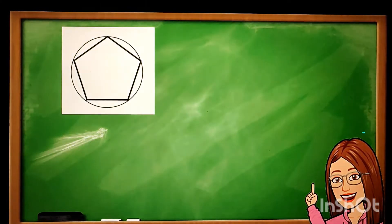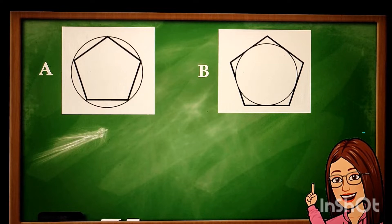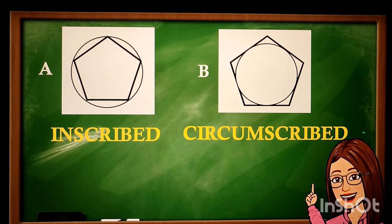I have here figure A and B. Which one is a polygon inscribed in the circle? And which one is circumscribed in the circle? Awesome! If your answer is A is inscribed and B is circumscribed, you are absolutely correct.